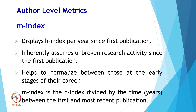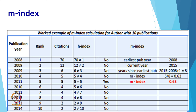M index is another variant of H index that displays an H index per year since first publication. The H index tends to increase with career length, and M index can be used in situations where H index is a shortcoming, such as comparing researchers within a field but with very different career lengths. M index inherently assumes unbroken research activity since the first publication and helps to normalize between those at the earliest stage of their career. M index is the H index divided by the number of years between first and most recent publications.